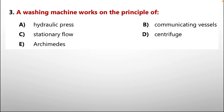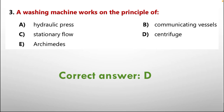Moving to question number three: a washing machine works on the principle of — A: hydraulic press, B: communicating vessels, C: stationary flow, D: centrifuge, E: Archimedes. Whenever we look at a washing machine in operation, the clothes inside the machine are directed away from the center, and this process is called centrifuge. So the correct option is D.